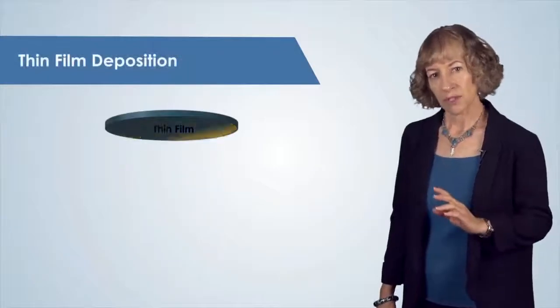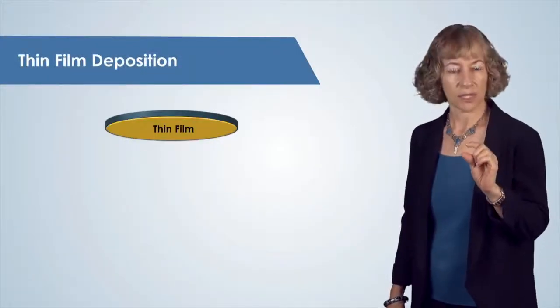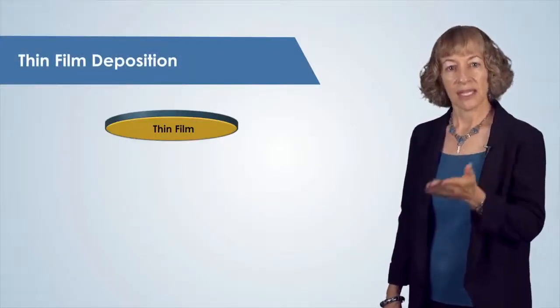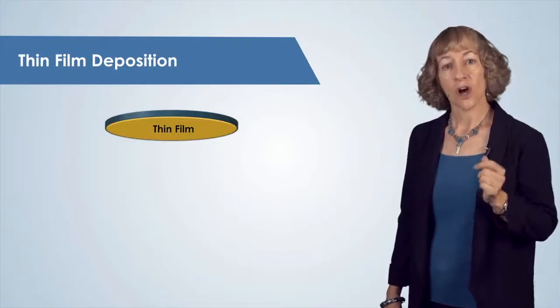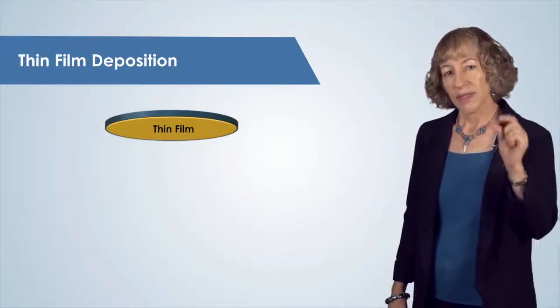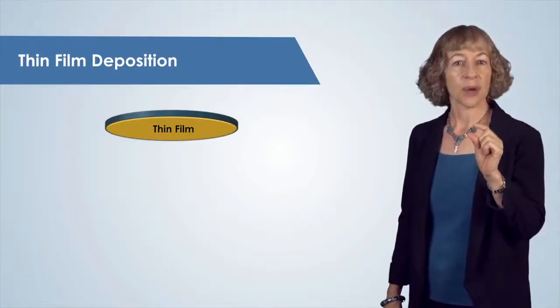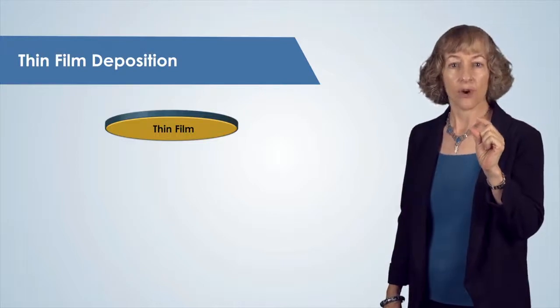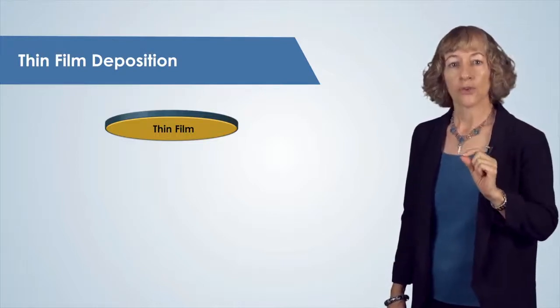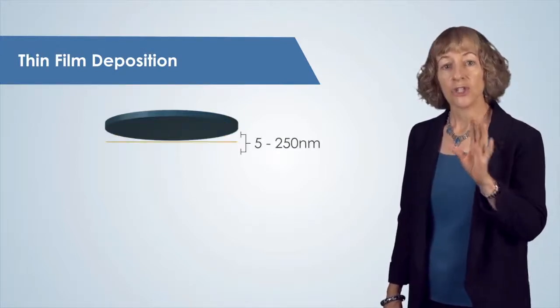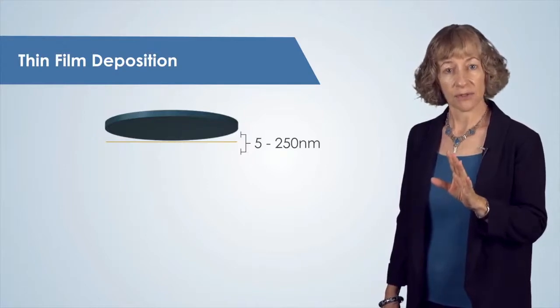Hello, I'm Nan Jokerst and this is our in-depth video about electron beam vacuum deposition of thin films. We use vacuum systems to deposit thin layers of materials such as metals and insulators onto our substrates. The thicknesses of these vacuum deposited layers are very thin, on the order of 5 nanometers to 250 nanometers.